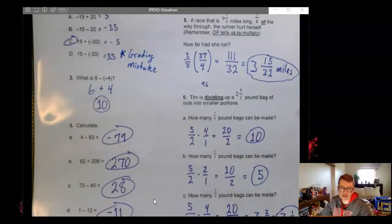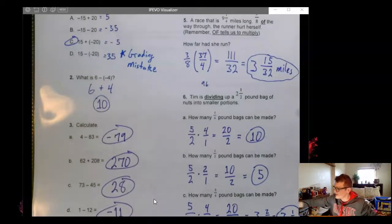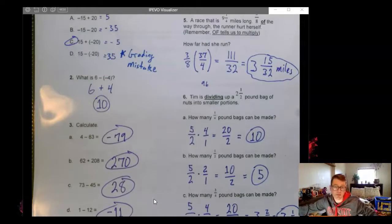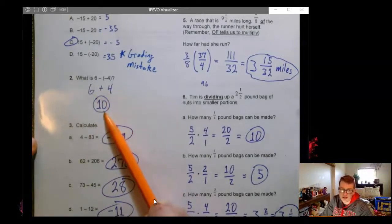What is 6 minus negative 4? Again, this was double checking that we realized that minus a negative is the same as adding a positive. So remember, taking away a bad guy is a good thing. Same as adding a good guy. Okay, so that would get 10 here.